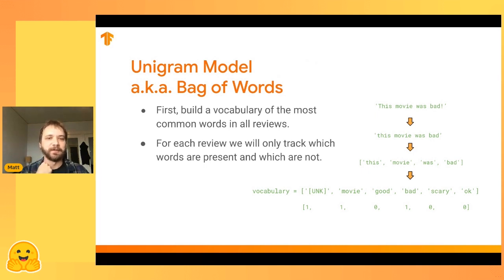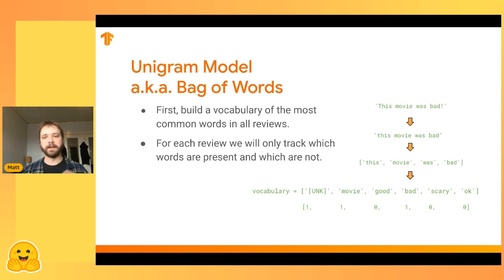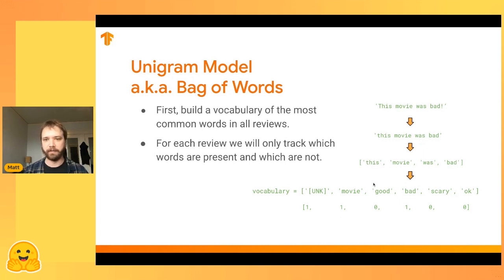The first model we'll build is a unigram model, also called a bag-of-words model. We build a vocabulary of the most common words in all our reviews, then encode each review as a big array of zeros and ones aligned with our vocabulary. A one means that word was present — for example, 'movie' is present, we get a one at that index. 'Good' is not present, we get a zero. That's the rough idea for this model.